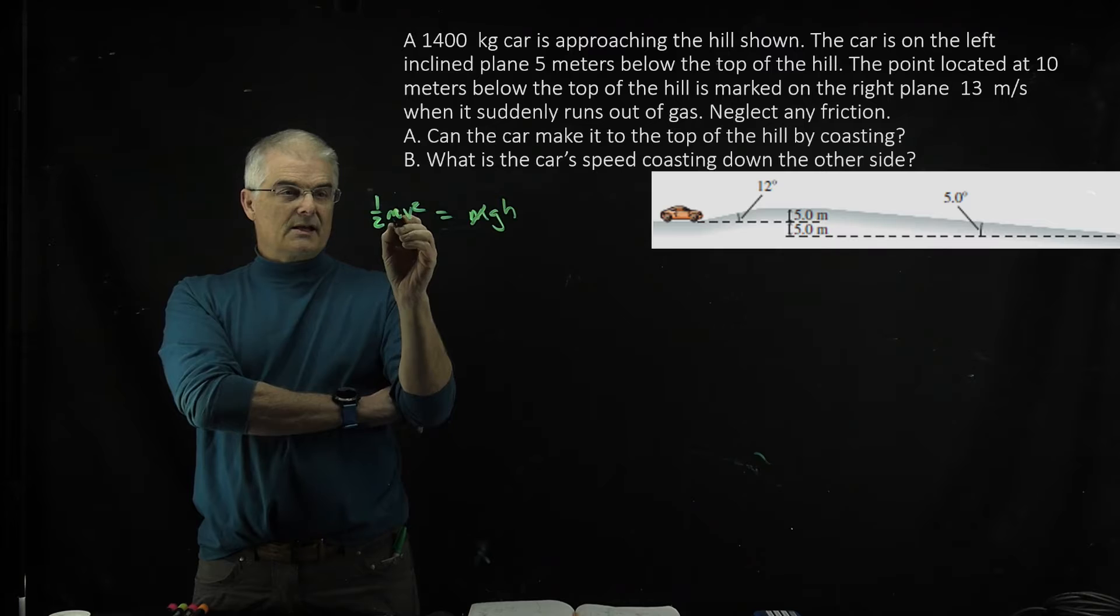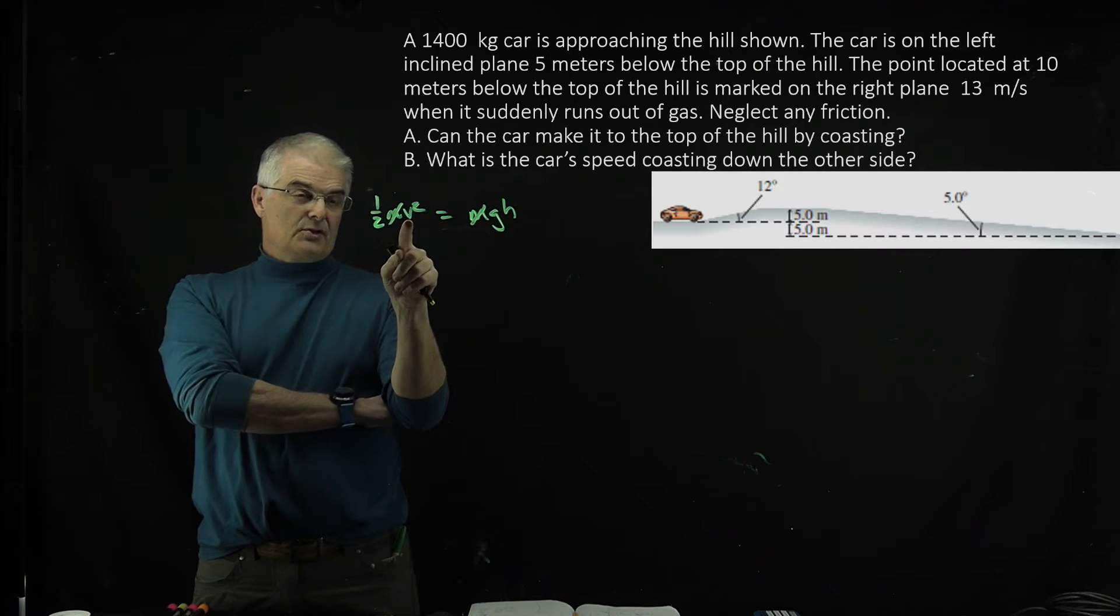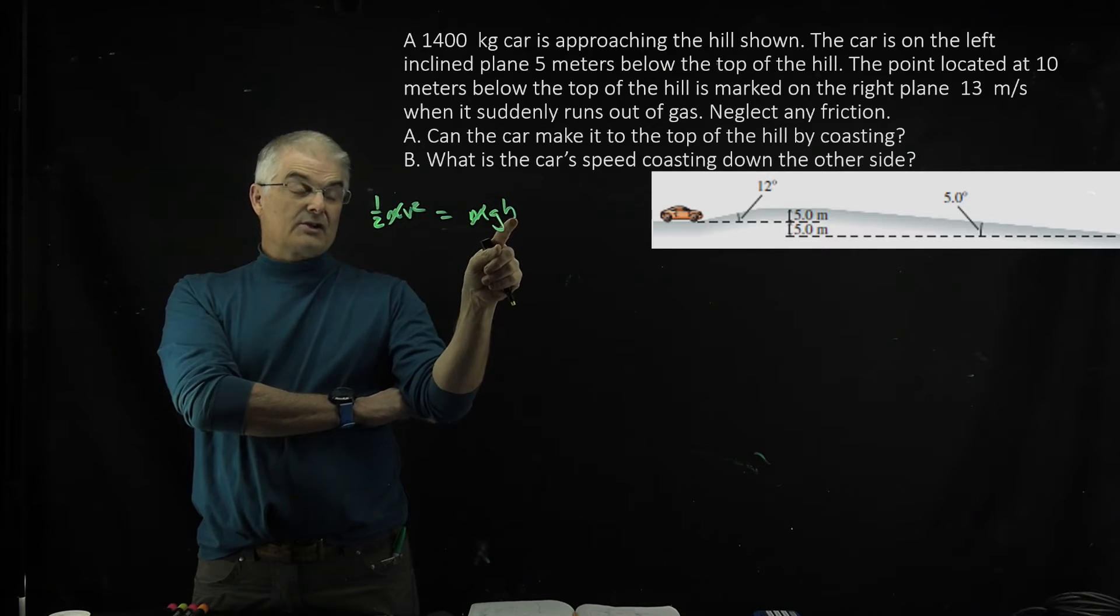mgh. The m's cancel out. You know the height of the hill - it looks like it's five meters. You're going to solve for the velocity, actually solve for the height.